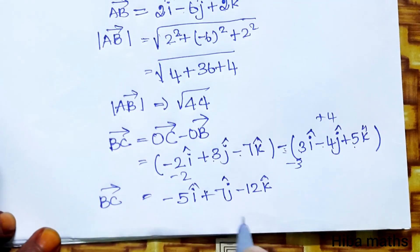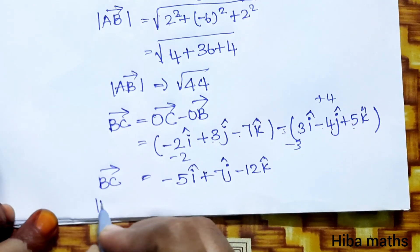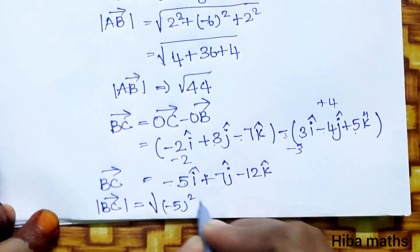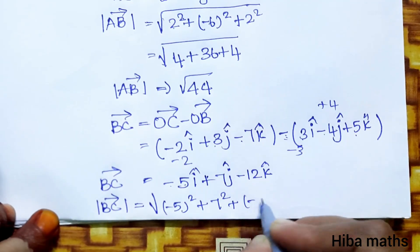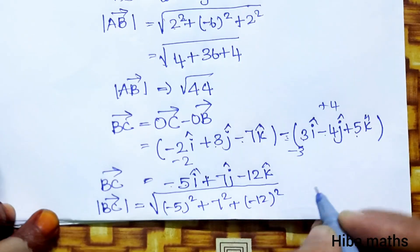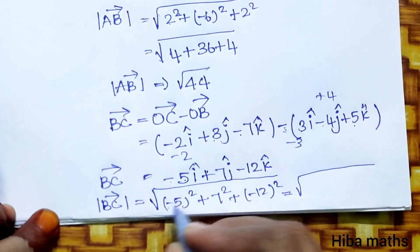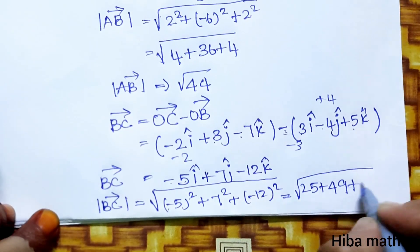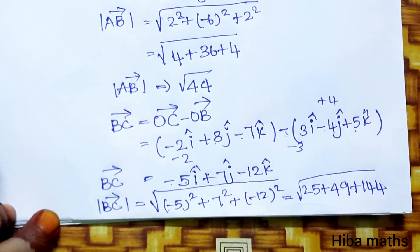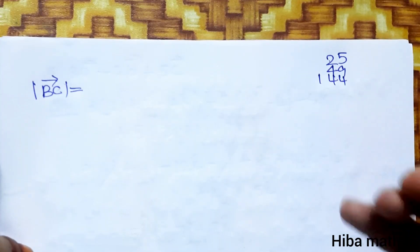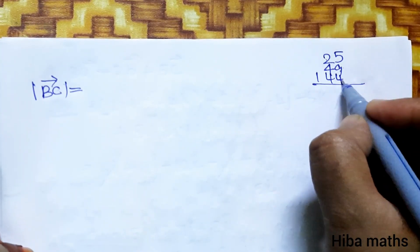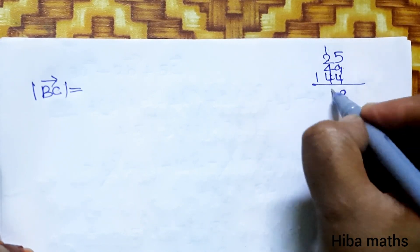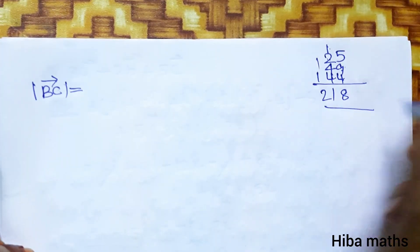The modulus of BC vector equals root of minus 5 squared plus 7 squared plus minus 12 squared, which is root of 25 plus 49 plus 144. Adding these: 25 plus 49 is 74, plus 144 equals 218. So modulus of BC vector is root of 218.